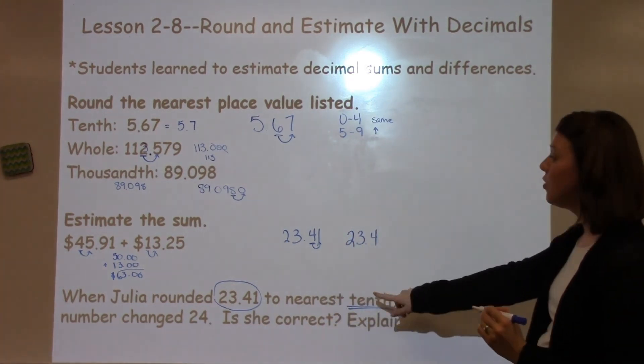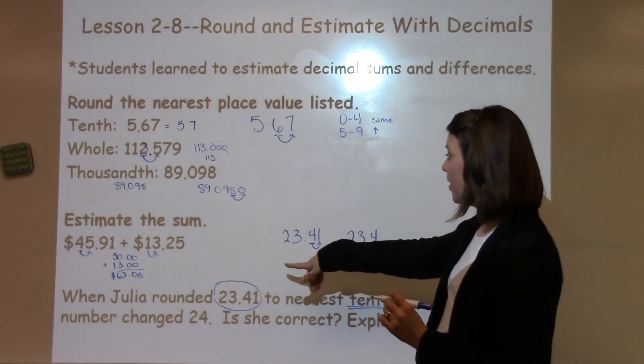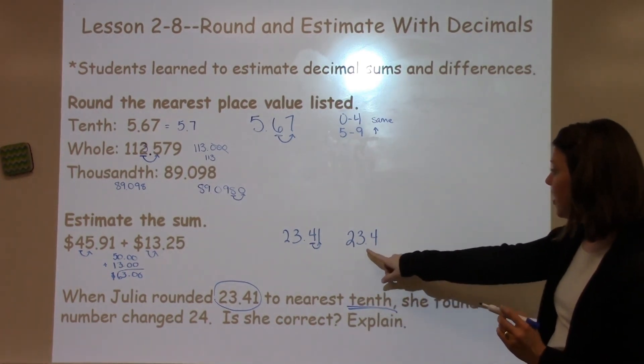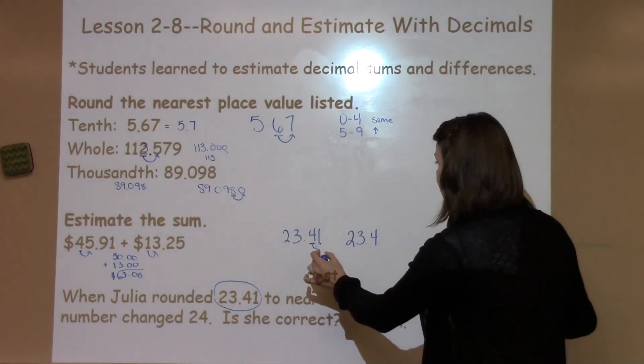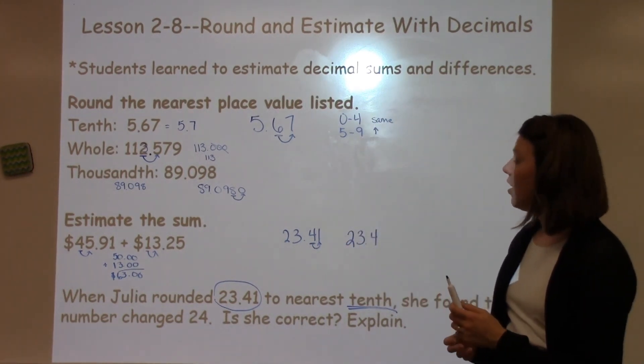No, she's not correct, because she rounded a whole number up. In this case, she needs to make sure that when she rounds, she rounds to the tenth spot. The 1 keeps it the same and keeps the answer at 23.4.